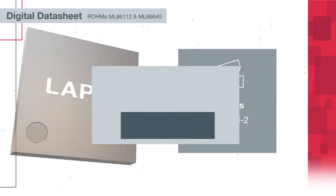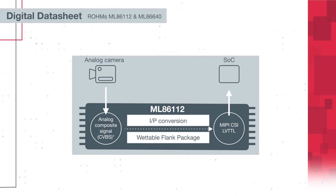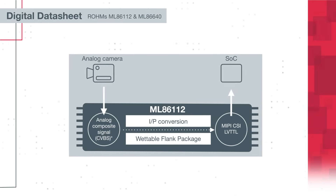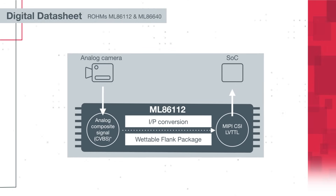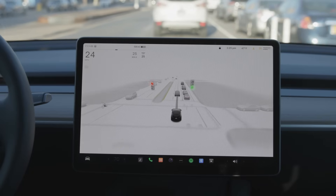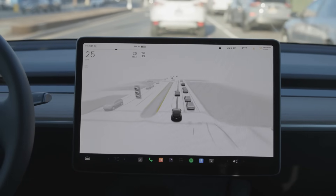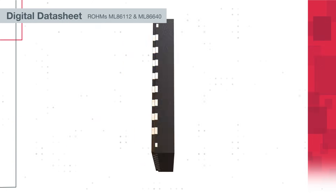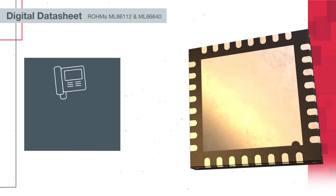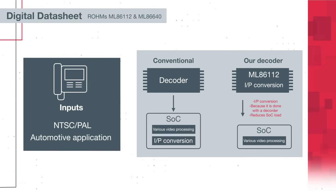The ML86112 offers two digital signal outputs — either MIPI CSI-2 or LVTTL — making it easy to connect to an analog camera such as in automotive systems. It accepts analog composite video input signals in the NTSC and PAL format.